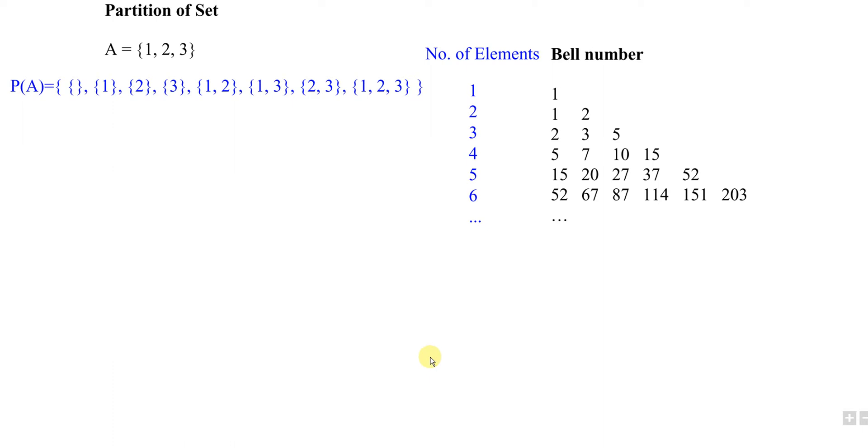Hi, today I would like to share how to list out all the different combinations of partitions of a given set. By using the bell number, we are able to know how many we could have for a given set.